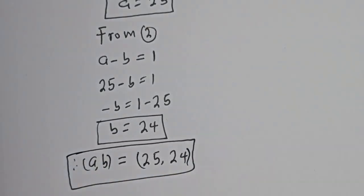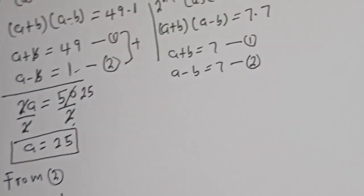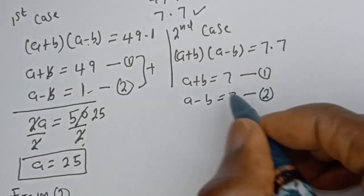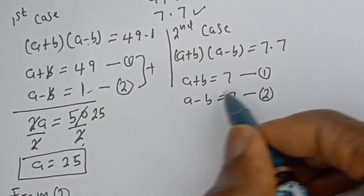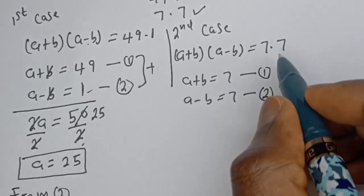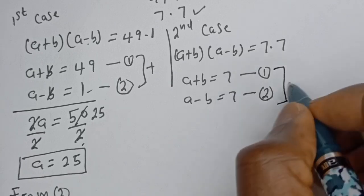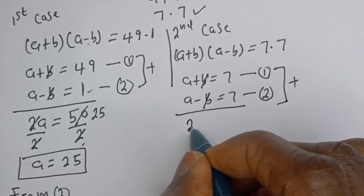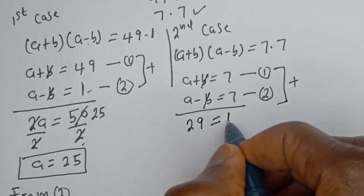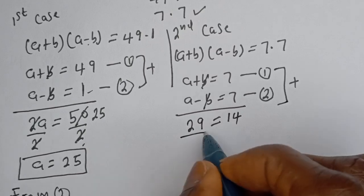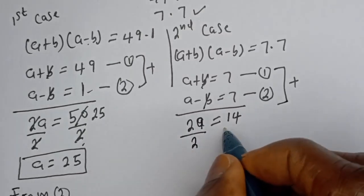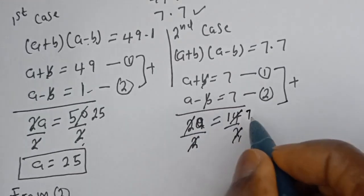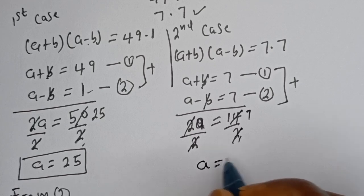Now let's consider the second case. A plus B equals 7 and A minus B equals 7. Using elimination, adding the two equations, B cancels. We get 2A equals 7 plus 7, which is 14. Dividing both sides by 2, A equals 7.